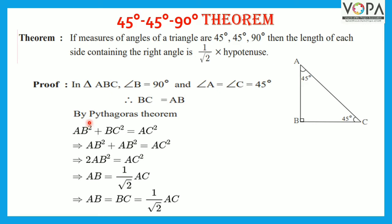Now, by Pythagoras theorem, AB square plus BC square is equal to AC square. Since AB and BC are equal, we can substitute the value of BC as AB.